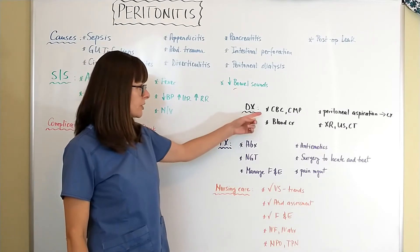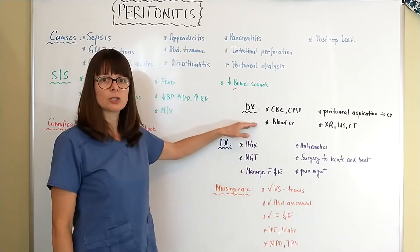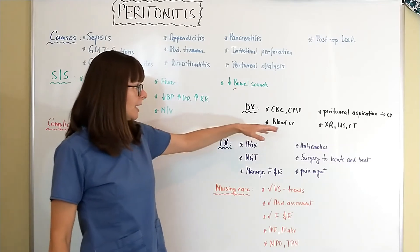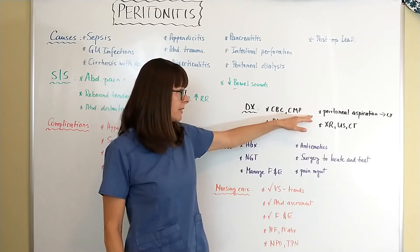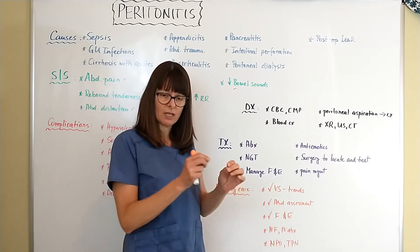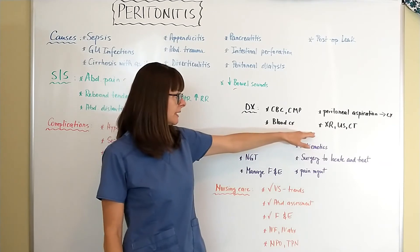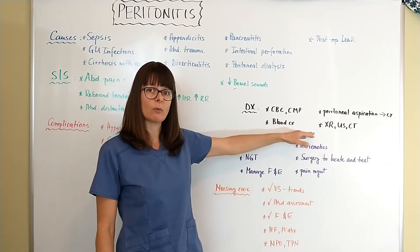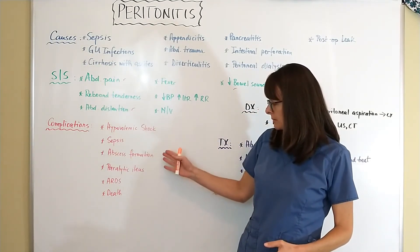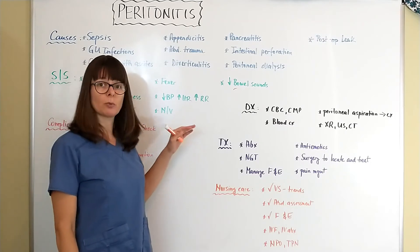For diagnostic tests, we'll check a CBC and CMP to monitor fluids, electrolytes, and hemoglobin and hematocrit. Blood cultures are essential because we need to determine if a localized infection is becoming systemic. The best way to obtain a culture from the peritoneum is by peritoneal aspiration — placing a needle into the peritoneal cavity to aspirate fluid and send it for culture — so we know which antibiotics to use. Imaging such as X-ray, ultrasound, and CT scan helps determine the extent of peritonitis, its origin, and whether complications like abscess or paralytic ileus are developing.